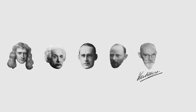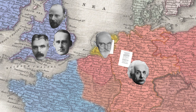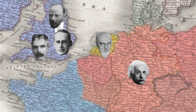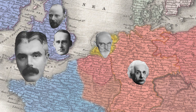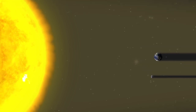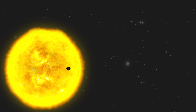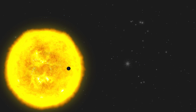Enter Willem de Sitter, an astronomer from neutral Holland, and English astronomer Frank Dyson. Because of his neutral status, de Sitter received copies of Einstein's paper in 1916 and quickly passed them to Eddington, who began promoting the theory and the need to test it via the bending of light. The astronomer royal Frank Dyson realized that the May 29th, 1919 eclipse would be perfect, as the path of totality would happen in front of the Hyades star cluster — a collection of some of the brightest stars visible to the naked eye, perfect for measurement.